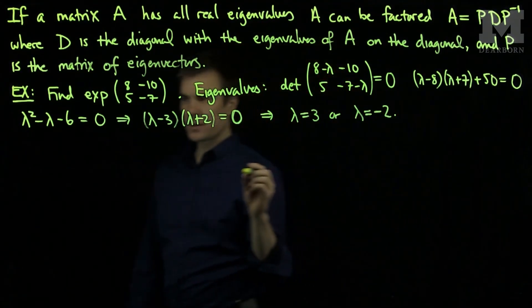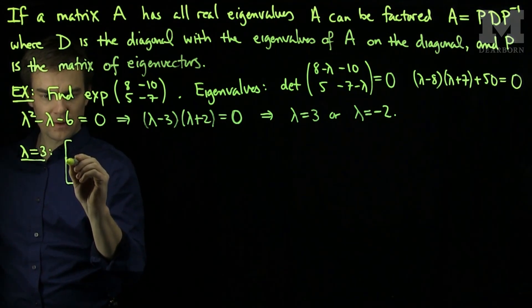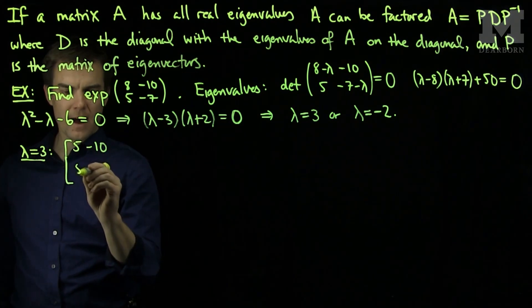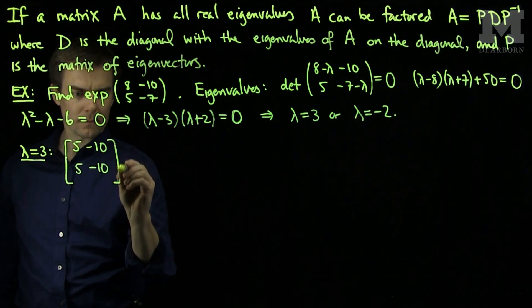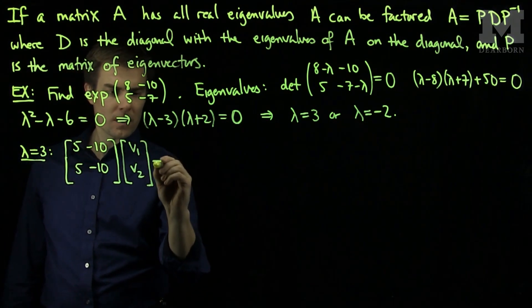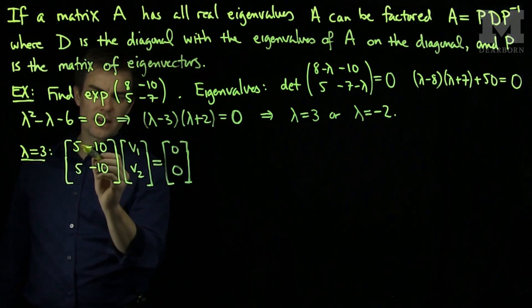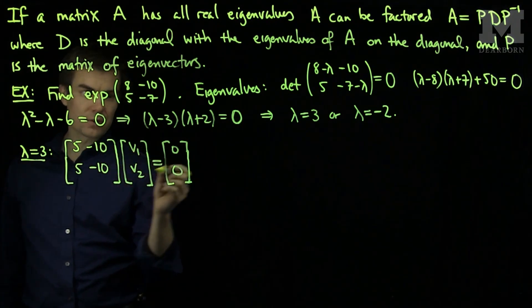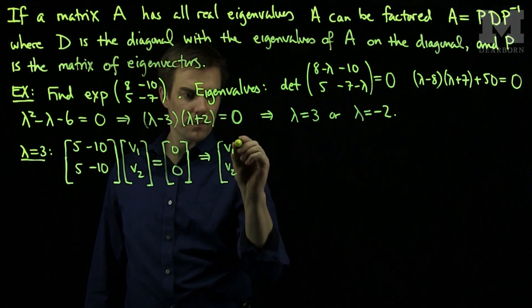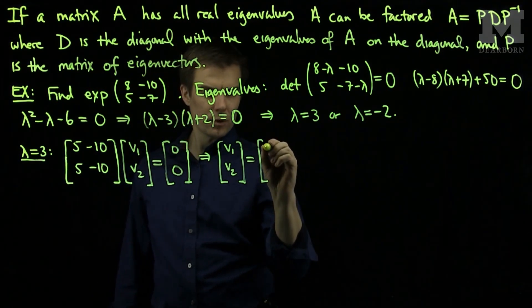Next let's find the eigenvectors. The eigenvector corresponding to λ = 3 is found by subtracting λ off the diagonal, giving [5, -10; 5, -10] [V1; V2] = [0; 0]. We can see that if V1 = 2 and V2 = 1 we have a solution, so the first eigenvector is [2; 1].